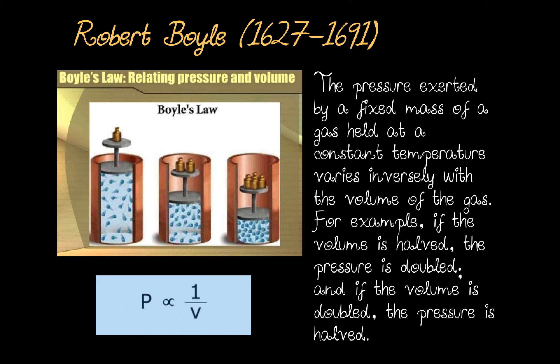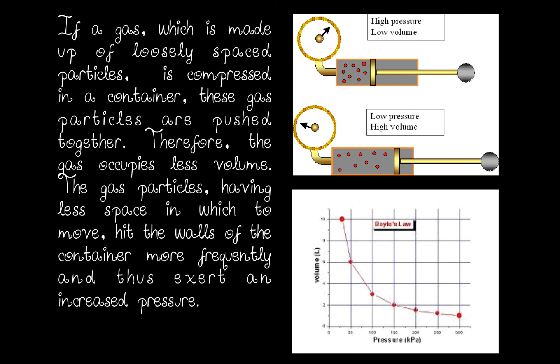Pressure is inversely related to volume. If a gas, which is made up of loosely spaced particles, is compressed in a container, these gas particles are pushed together, and therefore the gas occupies less volume. These gas particles, having less space in which to move, hit the walls of the container more frequently and thus exert an increased pressure. Look at the diagram at the top: when you have high pressure, the gas is occupying low volume; but when the pressure is low, the gas can occupy high volume. Consider the graph — as pressure increases, volume decreases.